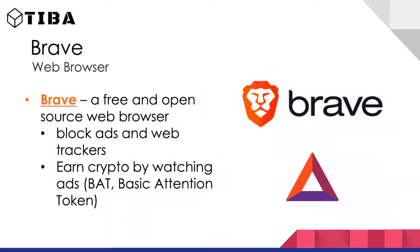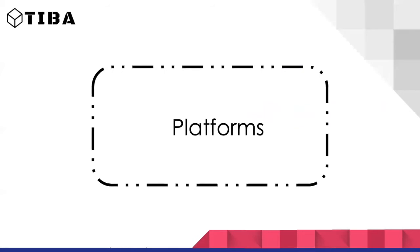Brave is a web browser popular in the blockchain space. It's a free, open-source browser that blocks ads and stops web trackers from tracking you. There's also a token called BAT — Basic Attention Token — that you can earn by watching ads. So you can actually collect and earn crypto over time as you watch those ads.